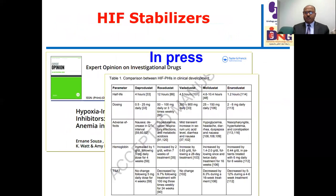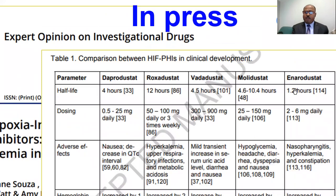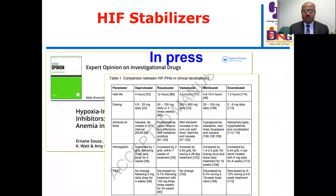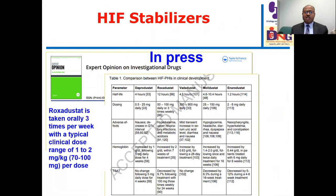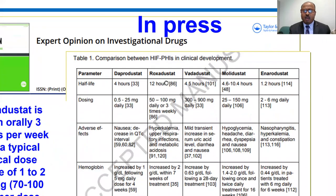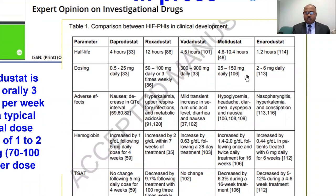The members of the HIF prolyl hydroxylase inhibitor class include roxadustat and others. The half-life of roxadustat is 12 hours, which is longer than other HIF-PHIs. The clinical impact is that roxadustat is given three times per week, every other day, at a dose of 1–2 mg/kg or 70–100 mg per dose. This reflects its longer half-life.